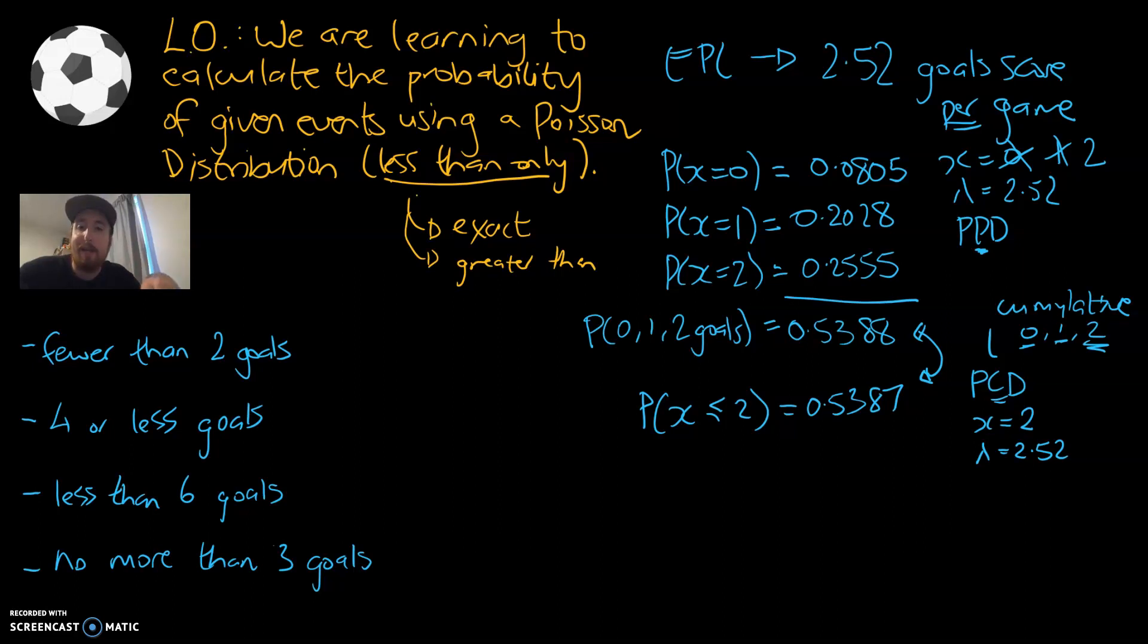I'm wanting to know, what is the probability of me seeing fewer than two goals? The way I start these questions is I always start with a number line. So let's stop at seven, but in theory that goes on forever. This line is really important because the most difficult skill is trying to figure out what the x value is, or what the highest value you're actually interested in is.